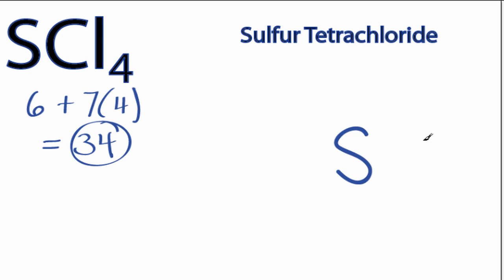Sulfur is the least electronegative. We'll put that at the center, and then we'll put the chlorines around the outside. There are 4 chlorines.